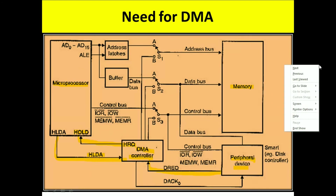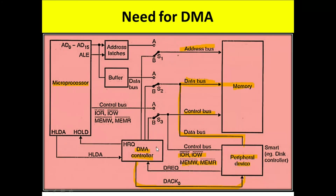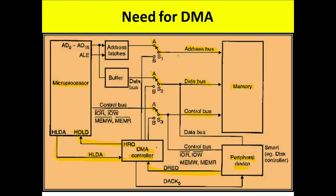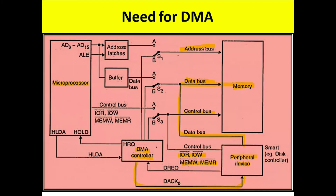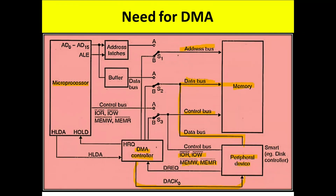Now the address bus, data bus, and control bus are under the control of the processor again. When the peripheral device wants to access the memory directly again, the same signals are transferred between the peripheral device and the DMA controller, and between the DMA controller and the microprocessor, so that the system bus comes under DMA controller control and direct memory accessing is performed. After completion, the system bus returns to the processor. This is the need for direct memory access.